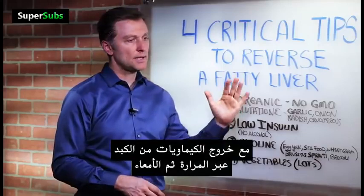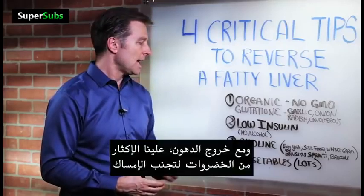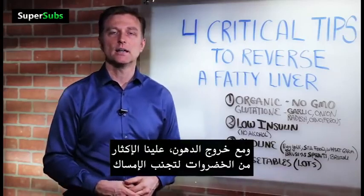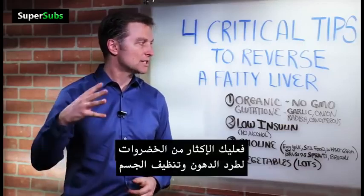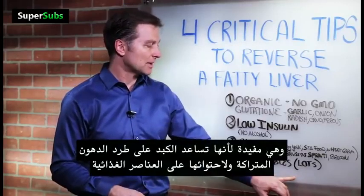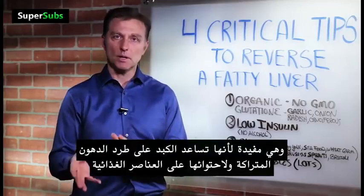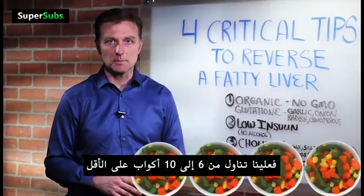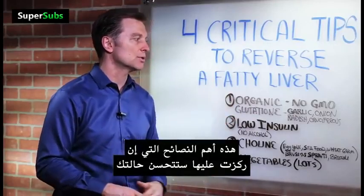As these chemicals and fat are coming out of the liver through the gallbladder and out through the intestine, we need to keep our vegetable intake very, very high to prevent constipation or any type of backup. We want to keep vegetables high to flush all this fat out and keep the system clean. All the great phytonutrients and liver-supporting nutritional factors are in vegetables. We should consume at least six to ten cups. Just focus on these most important things and you're going to be in really good shape.